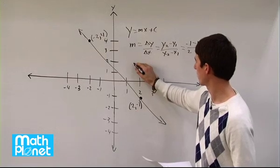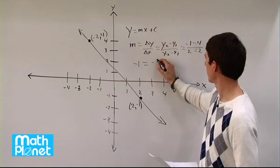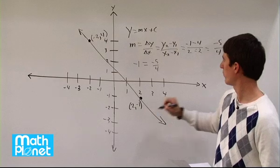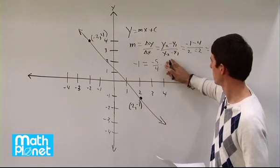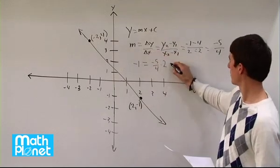Let's choose this one. If we plug in negative one for y equals, we have m negative five-fourths. Then we have two for x, so times two here, not x, but two, plugging this into this, plus c.